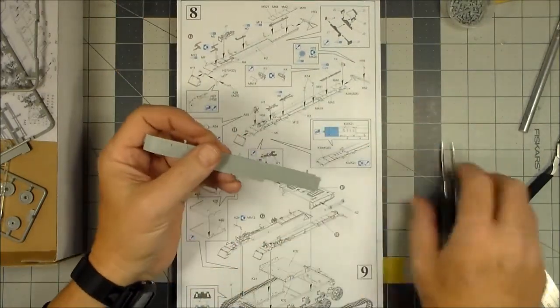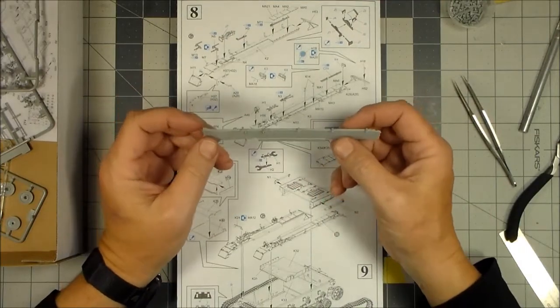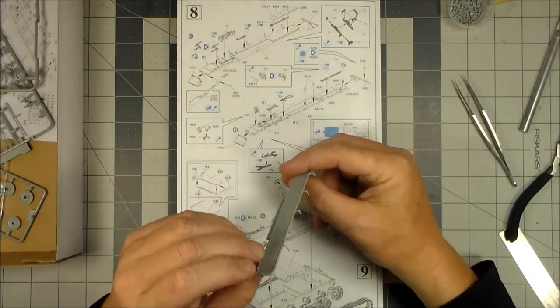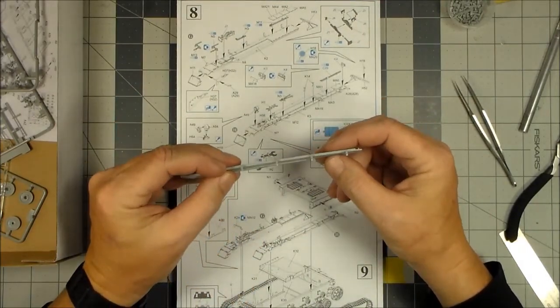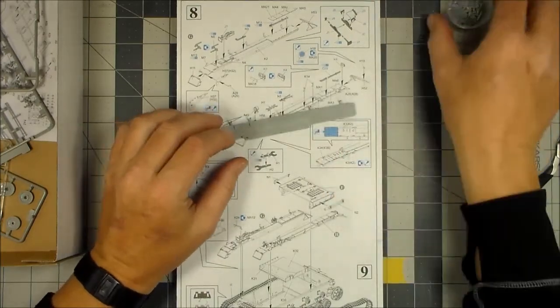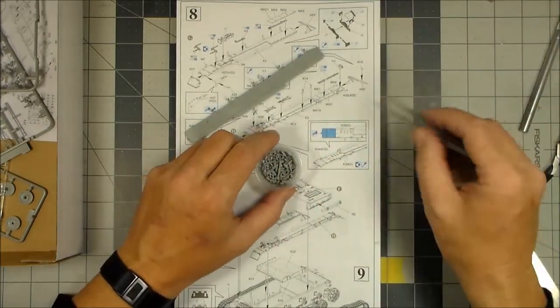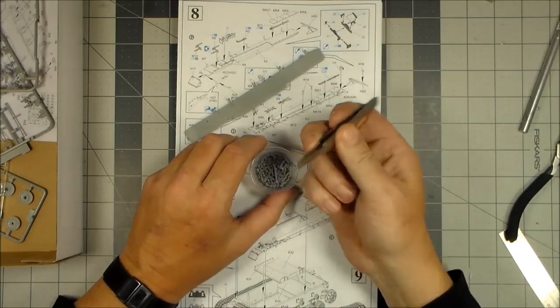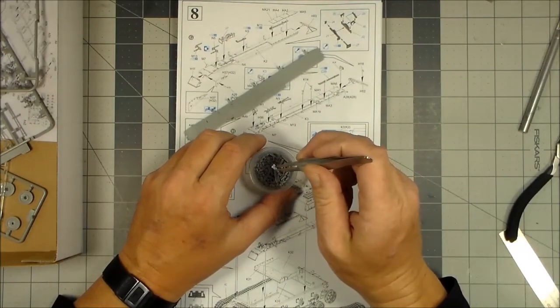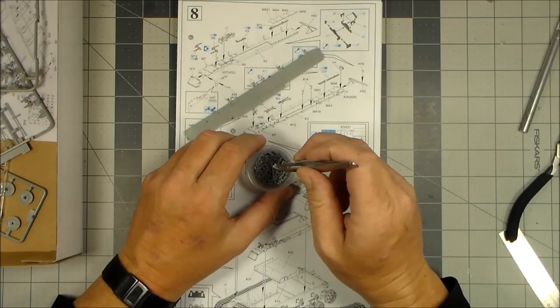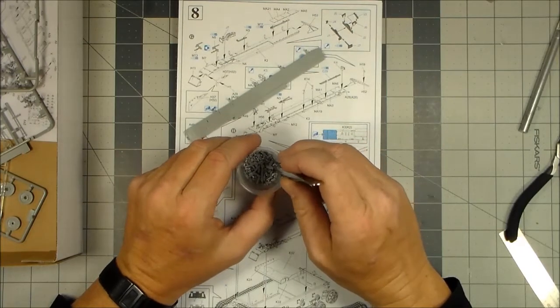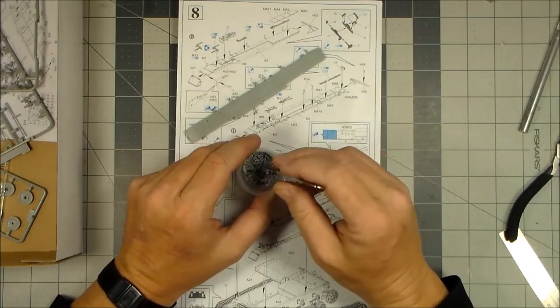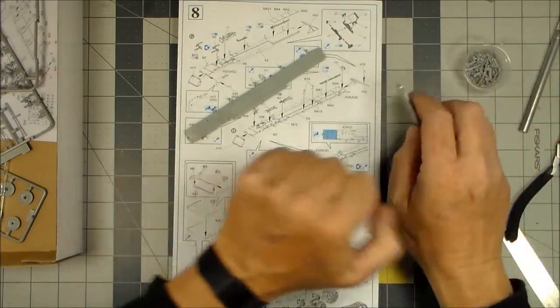And just a quick note for people building these kits, especially if it's your first Dragon kit, you will notice that there are a lot of these type of things: sprue gates, little bits of sprue, runner, whatever you call it. There's lots of those all over the kits, and it's easy to just start clipping away.